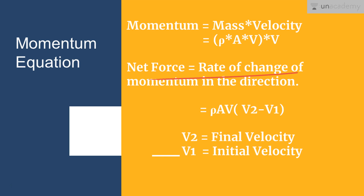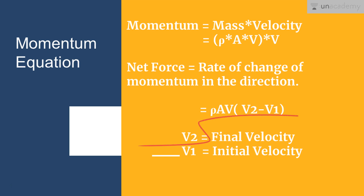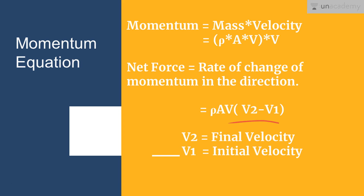The net force is equal to the rate of change of momentum in that particular direction. Consider a pipe where the velocity at one section is V2 and at another section is V1. The net force will be equal to the mass flow rate into the difference of velocity between the two sections, giving: F = rho · A · V · (V2 − V1), where V2 is the final velocity and V1 is the initial velocity.